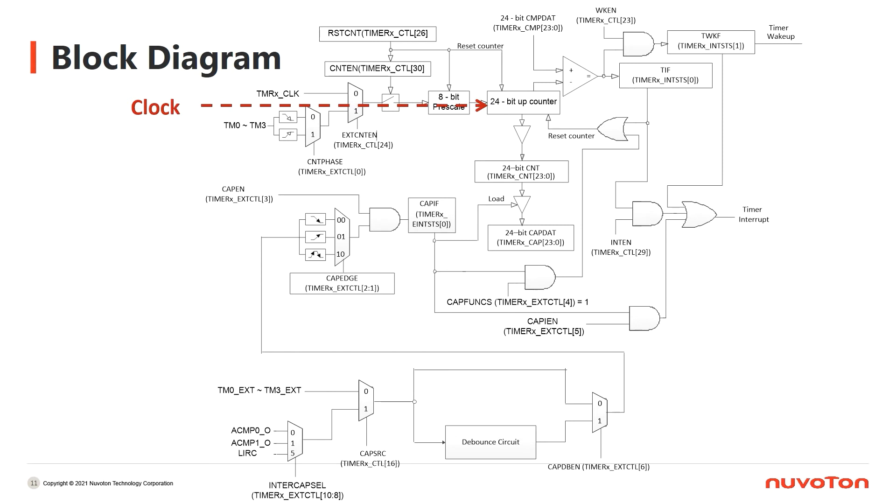Except for using the clock source embedded in M031 and M032 series, we provide a way to use external clock source from TM0 to TM3 pins. There is a prescaler for adjusting the frequency of the counter. We will also set the value of the comparator as the timeout value. When the counter counts to the value set in the comparator, the TIF flag will be raised. When TIF flag is raised, if the register INTEN is enabled, which means the interrupt is enabled, it will trigger an interrupt. If the register WKEN is enabled, which means the wakeup is enabled, the TWKF flag will be raised and then trigger a wakeup or an interrupt.